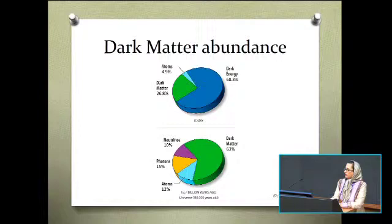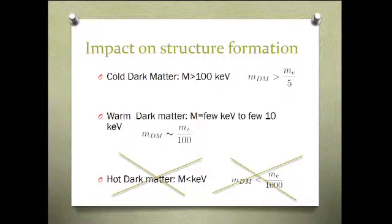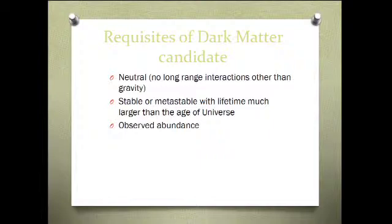Observations show that nowadays dark matter comprises the majority of matter in the universe, something like five times more than ordinary matter. Depending on the mass range, dark matter particles can impact structure formation differently. From this consideration, light dark matter lighter than mass of the electron divided by a thousand is already ruled out.